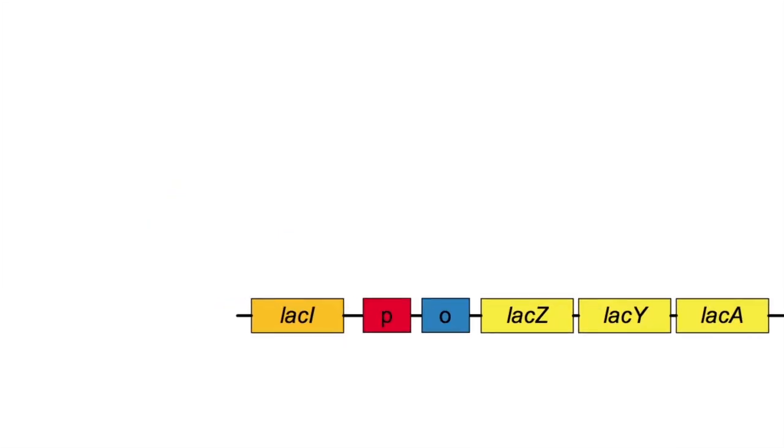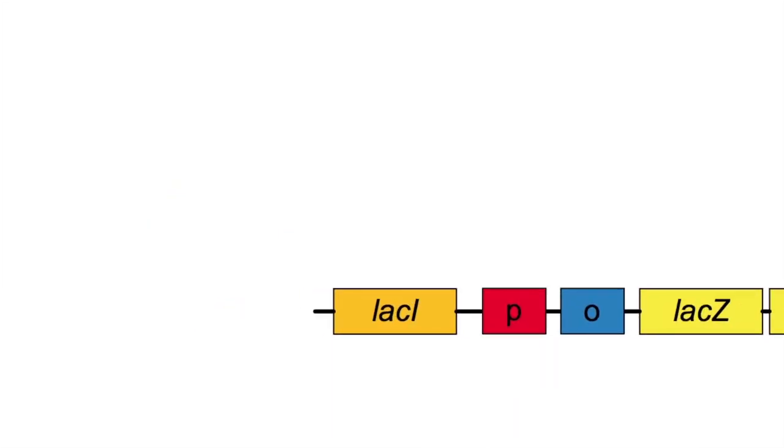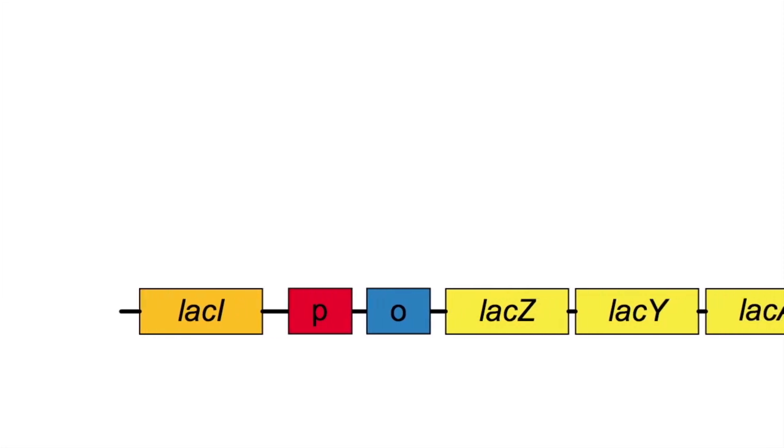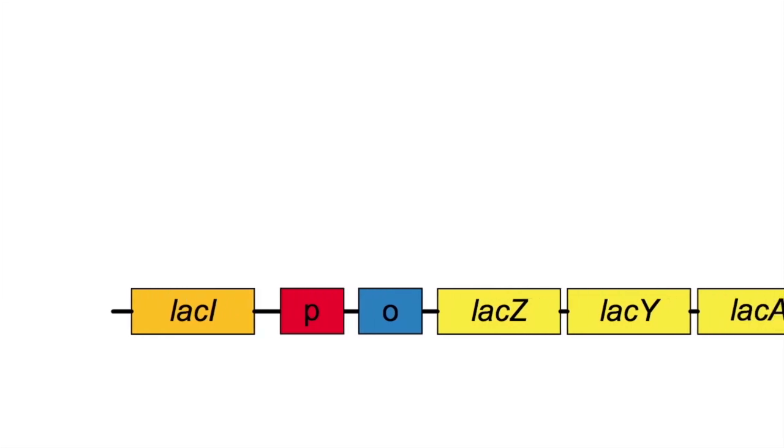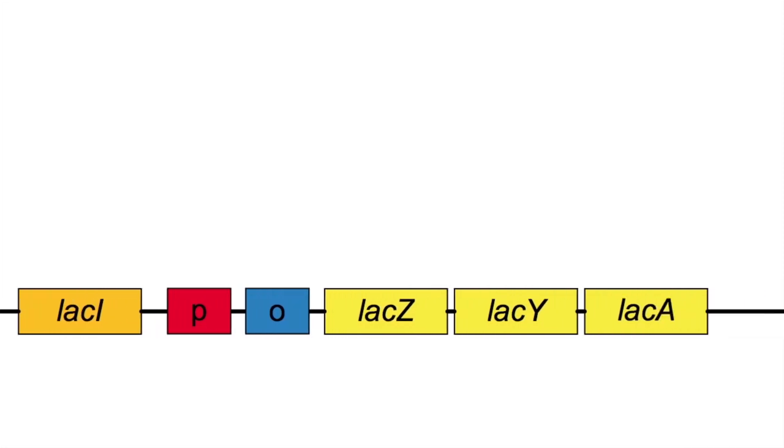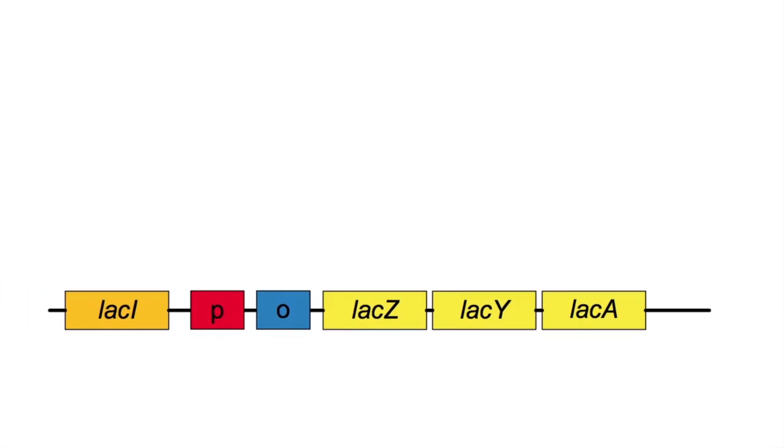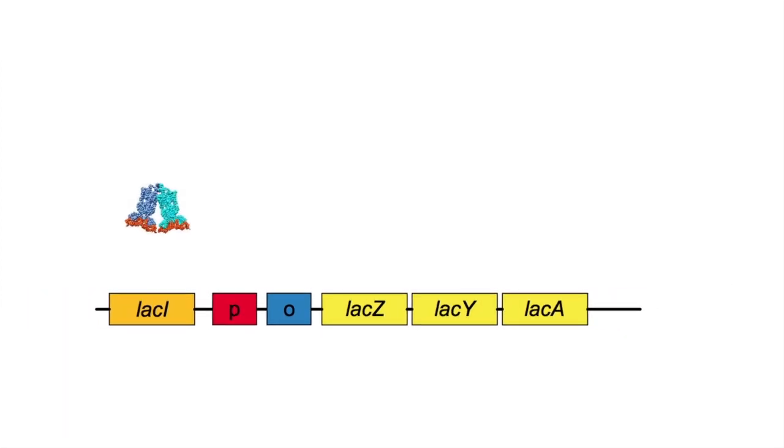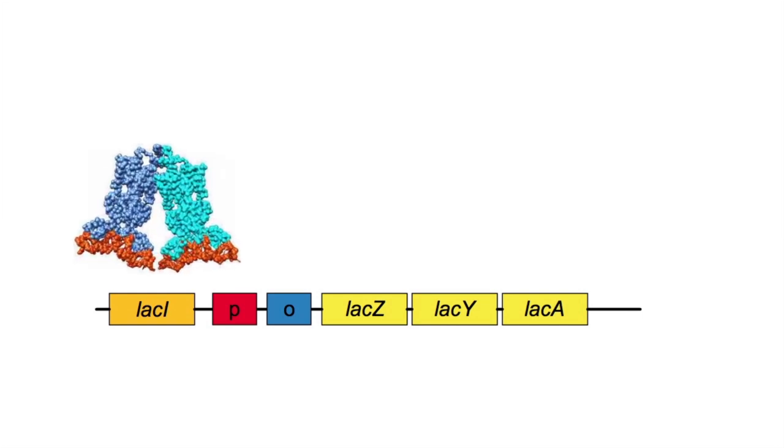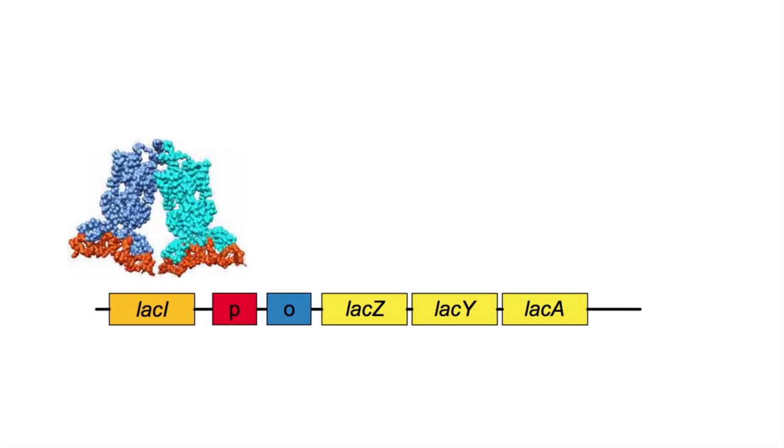First is the lac repressor, lacI. The second is the operator sequence on the DNA. This is the sequence that lacI binds to. The lac repressor is an example of negative regulation. This protein, when synthesized, is in an active state and can bind DNA. It will bind to its operator sequence and block transcription of the lac messenger RNA.